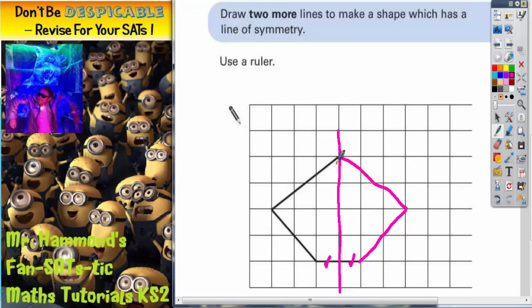And finally all we would have to do is join it up. Obviously you would use a ruler. And that is your finished shape. The line of symmetry is down the middle and these two halves are symmetrical.